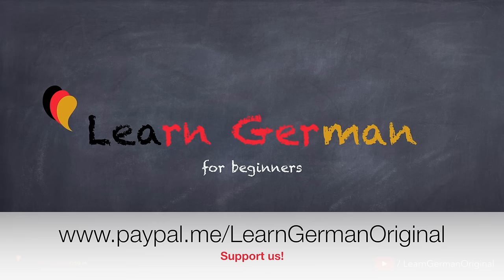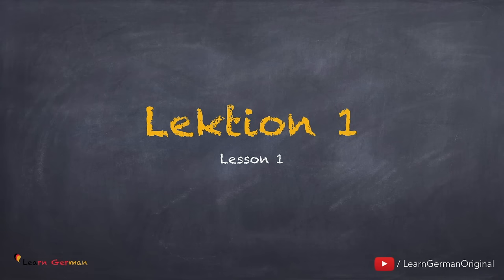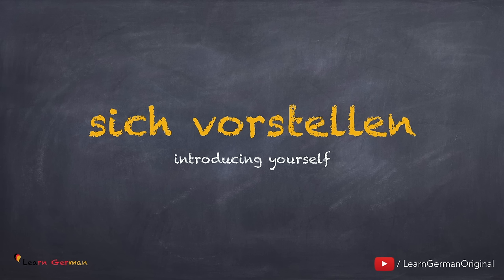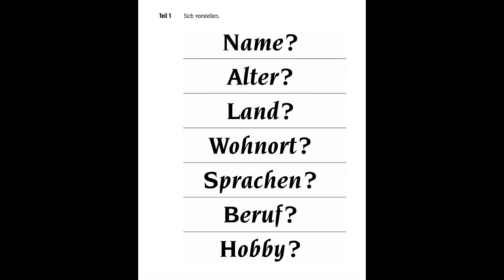If you are through with the A1, these structures will not be difficult for you. Lektion eins. We'll be doing various sentences and don't forget you can always change them a bit according to your personal details. The exam has three parts. In the first part you have to introduce yourself. These are the words you get: Name, Alter, Land, Wohnort, Sprachen, Beruf, Hobby.